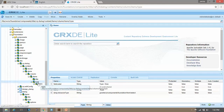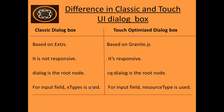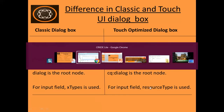The fourth difference is that for input fields, the 'xtype' property is used in the classic dialog box, whereas for input fields in the touch optimized dialog box, the 'sling:resourceType' property is used.